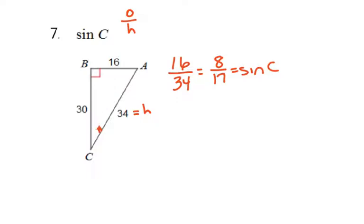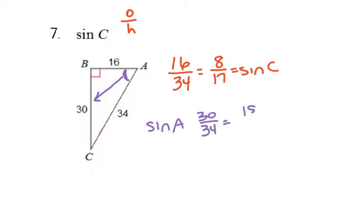Now if you are doing a different question — so if it said sine A — that's going to be different because you're going to be going from angle A, and the side opposite would be 30. The hypotenuse is still 34, but it's going to give us a different ratio. They're both even, so we'd have 15 over 17 instead of 8 over 17. So make sure you're paying attention to which angle you're starting from.